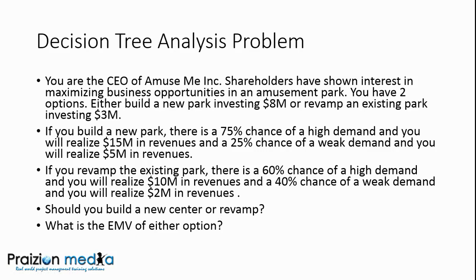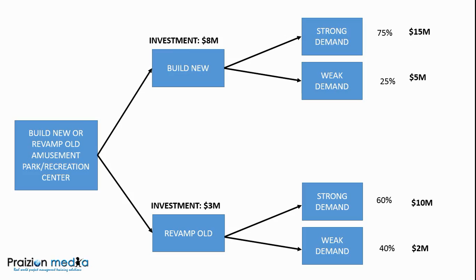You need to be able to draw the different nodes and where the different options branch out. You can see the investment of $8 million. If we build, strong demand — a 75% chance of that; weak demand — a 25% chance of that. And then if we revamp, we've got the investment of $3 million, strong demand at 60% chance with $10 million revenue income, and then weak demand — 40% chance of that happening with $2 million revenue.